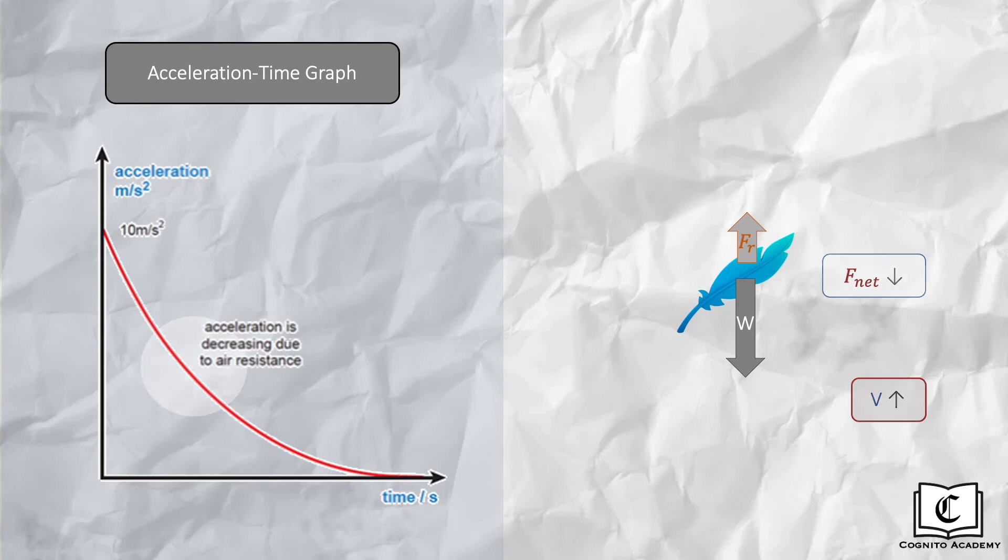The feather accelerates to its maximum velocity, which we call terminal velocity, where air resistance cancels out the weight entirely, and net force here is zero. And hence acceleration is also zero.